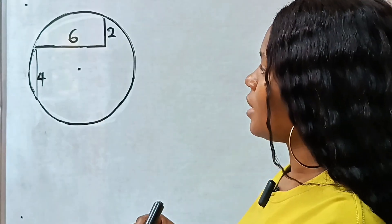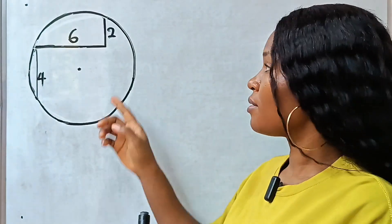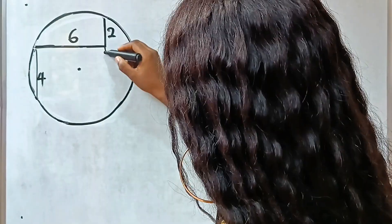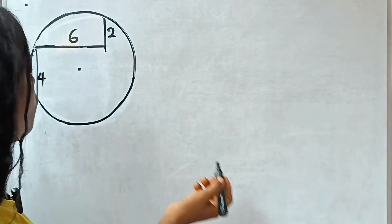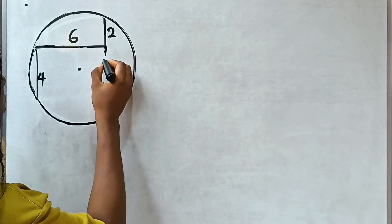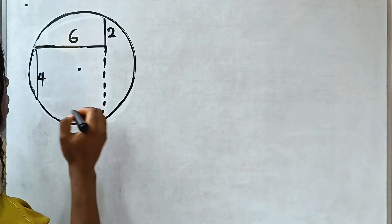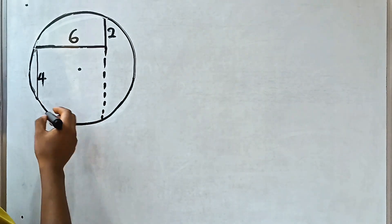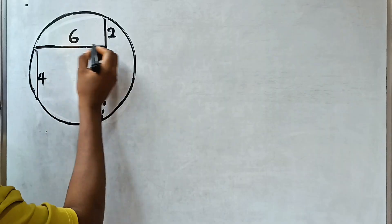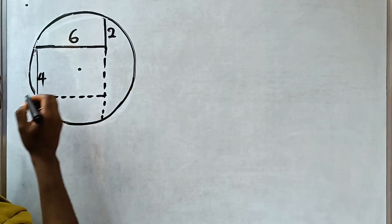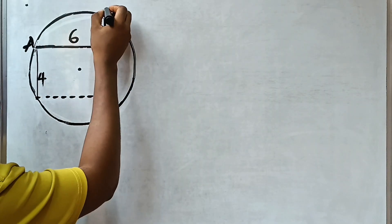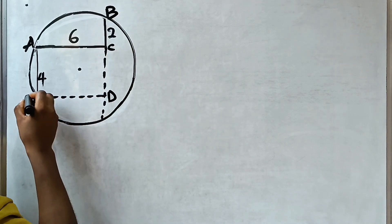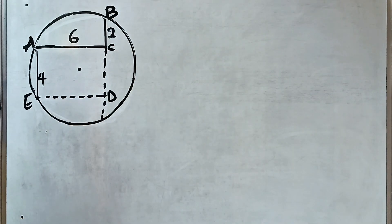First of all, let us drop a line from here to this part of the circle, a straight line. If we should drop a straight line to this point, and a perpendicular line to this line, parallel to this particular line. Now, let's call this A, B, C, D, and E.